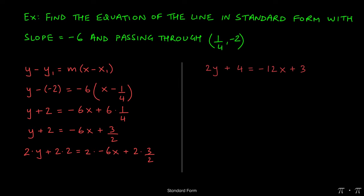So this leaves us with 2y plus 2 times 2, which is 4, equals 2 times negative 6, which is negative 12x. These 2's cancel, leaving just the 3. So that's what gives us this equation.